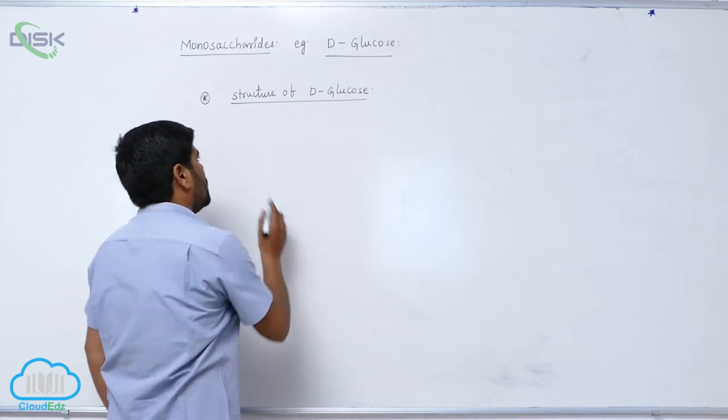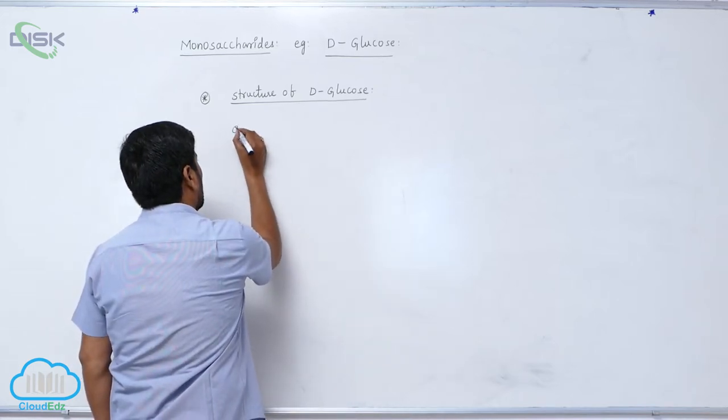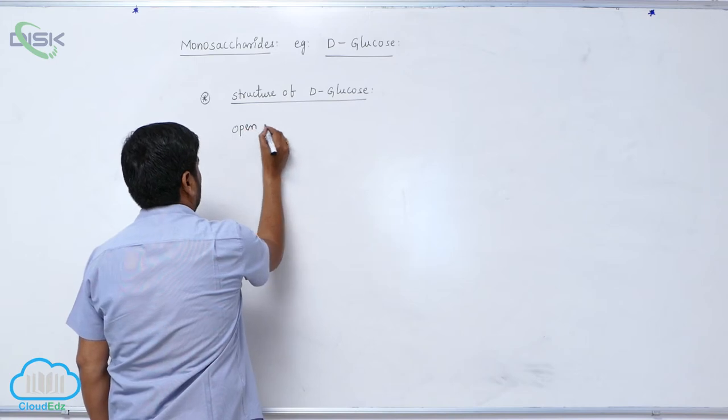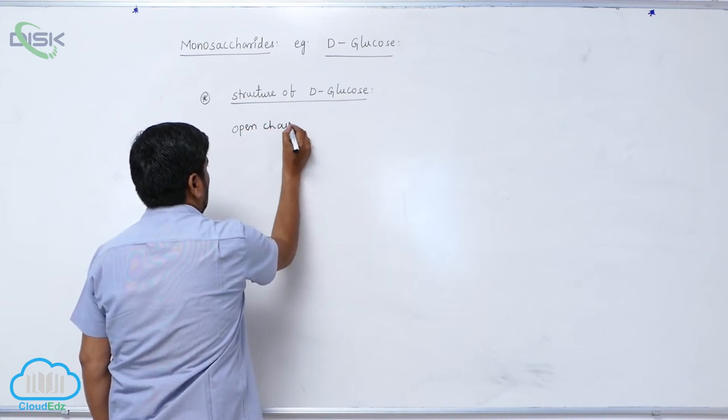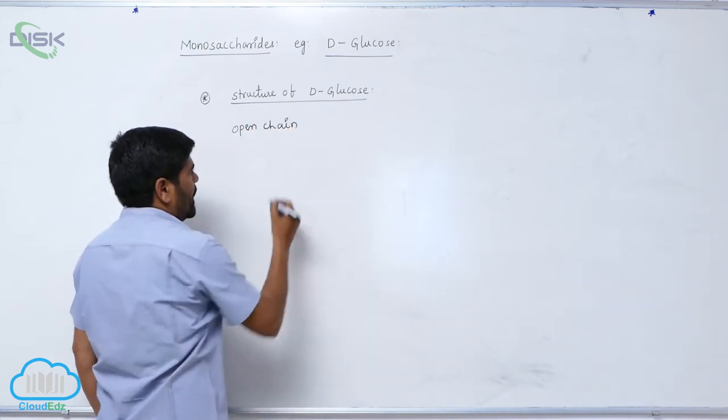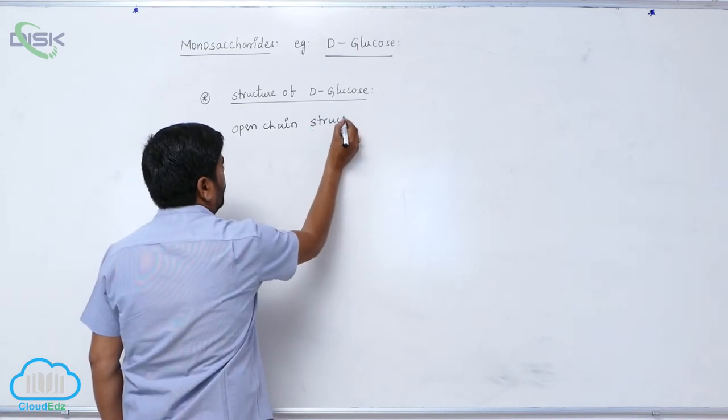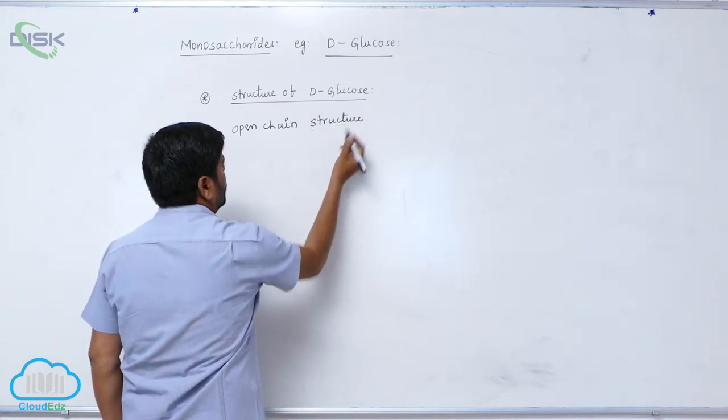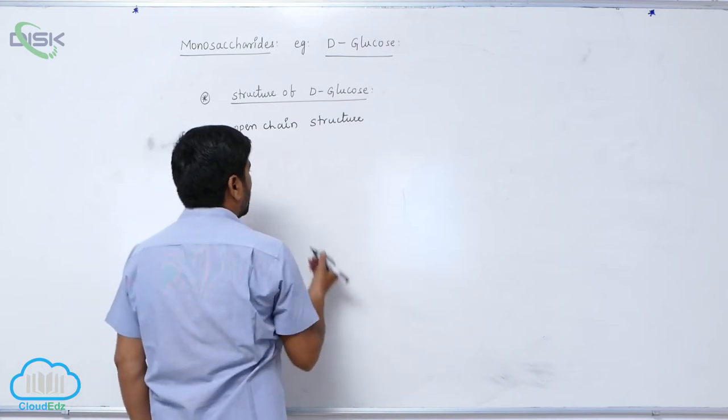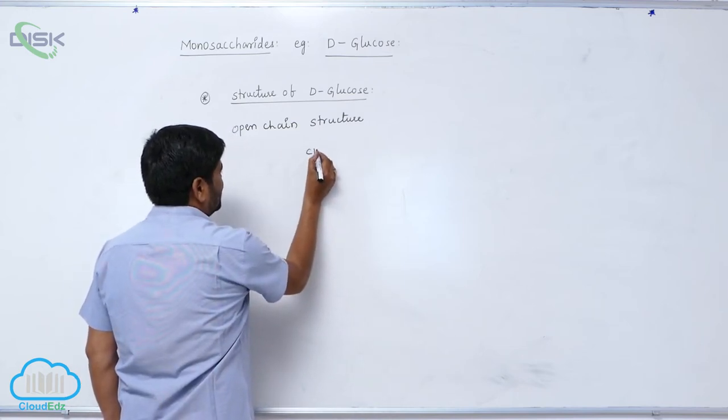The open chain structure of glucose - the first carbon compulsory contains